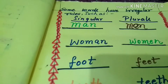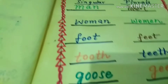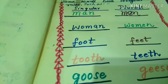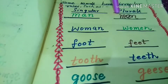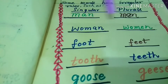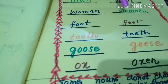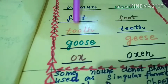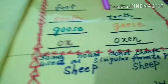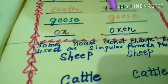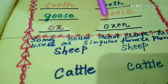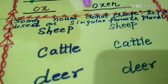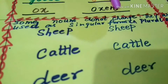Some words have irregular rules. Singular, plural: man, men. Woman, women. Foot, feet. Tooth, teeth. Goose, geese. Ox, oxen. Some nouns do not change.